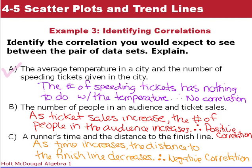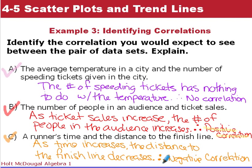In our second example: the number of people in the audience and ticket sales. As ticket sales increase, the number of people in the audience increases, so we have a positive correlation. And our last one: a runner's time and the distance to the finish line. As time increases, the distance to the finish line is going to decrease, so we end up with a negative correlation — one data set goes up and the other decreases.